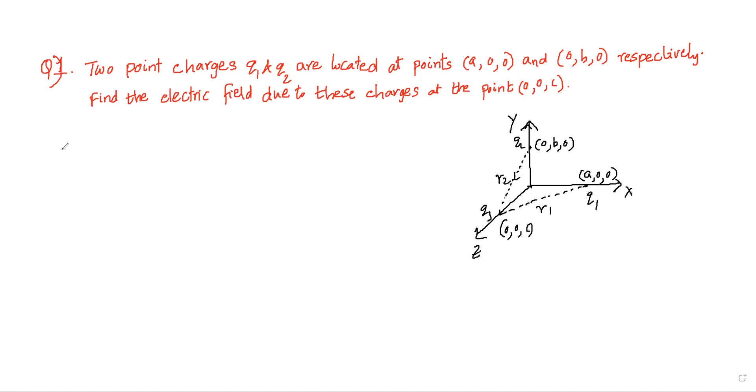Now, net electric field at point (0,0,C), which means Q3 point due to Q1 and Q2. So E_net is equal to E1 plus E2, that is equal to 1/(4πε₀) into Q1/R1³ R1 vector plus Q2/R2³ into R2 vector.